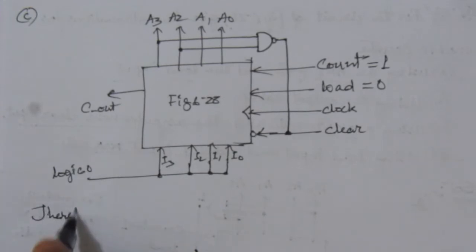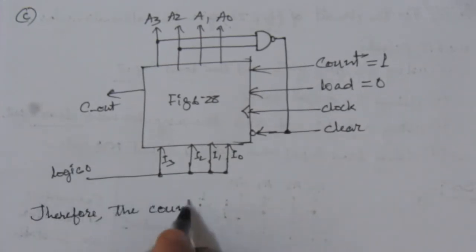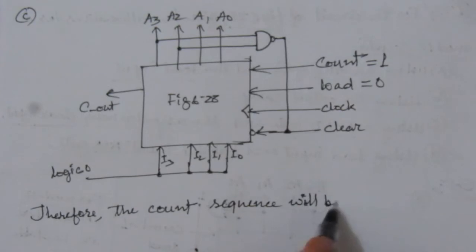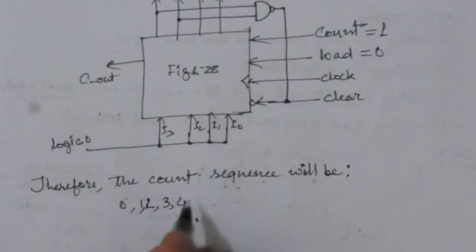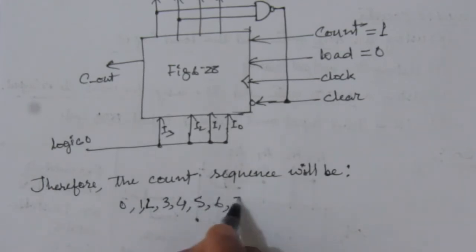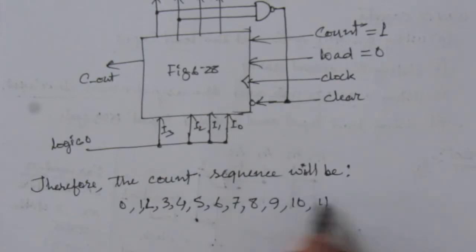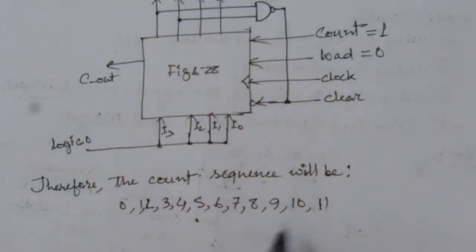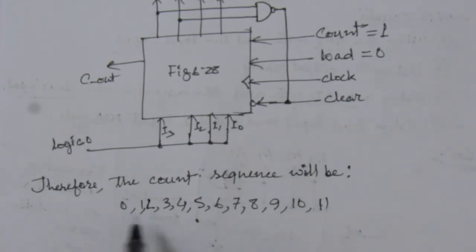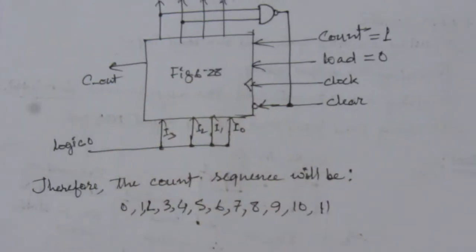Therefore, the count sequence will be 0, 1, 2, 3, 4, 5, 6, 7, 8, 9, 10, 11. Whenever the count goes to 12, this circuit will be reset — cleared to 0000. Whenever we have 12 here, it will go back to 0000, meaning after 11 we will have 0 again. So we have 12 count states, making this a mod 12 counter.